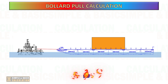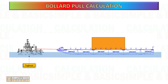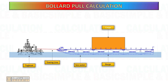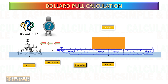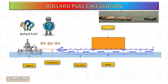Hello. Bollard pull calculation is a crucial aspect in the design and operation of marine vessels, particularly in the maritime and offshore industries. Bollard pull refers to the pulling force exerted by a vessel when it is stationary and using its propulsion system at maximum power against a fixed point such as a bollard. In this video, you will learn how to do a manual calculation for bollard pull, which will be beneficial for your planning and for selecting the right tugboat.